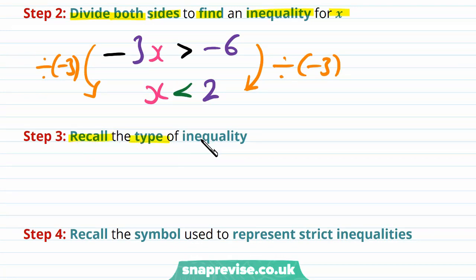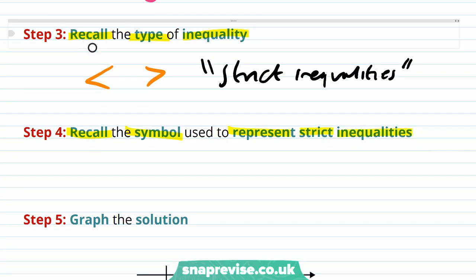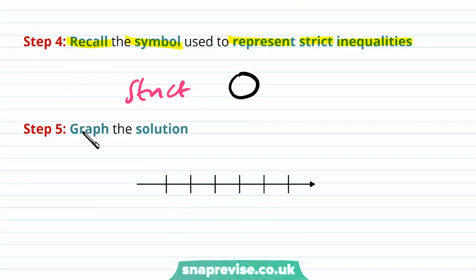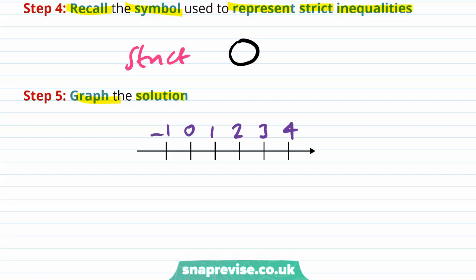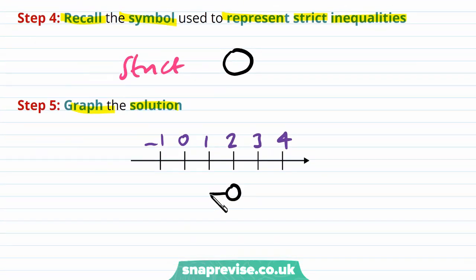Step 3: recall the type of inequality. This is a strict inequality. Step 4: recall the symbol used — for a strict inequality we use a plain circle. Step 5: graph the solution. On a number line with values minus 1, 0, 1, 2, 3, and 4, we place a plain circle at 2 and draw an arrow going to the left, because x is strictly less than 2.